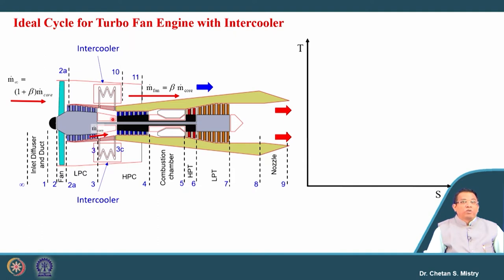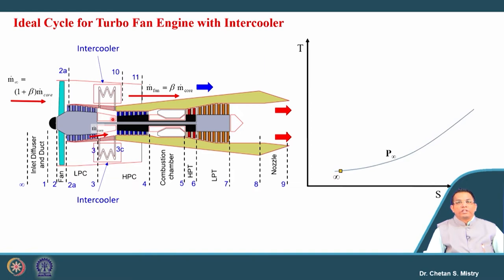The question is: what is the meaning of heating and cooling in our engine and why are we putting this kind of configuration? Let us understand this in terms of the thermodynamic cycle on a T-s diagram. Consider the atmospheric pressure line and the intake configuration. From 2 to 2a, this represents the compression work in the fan, and from 2a to 3 represents the LP compression process.